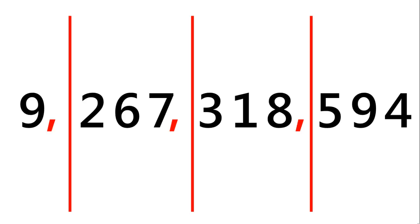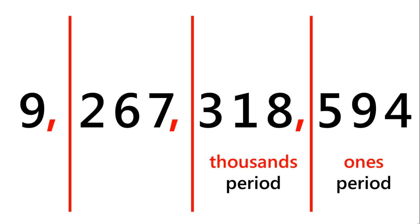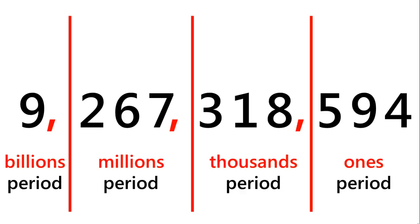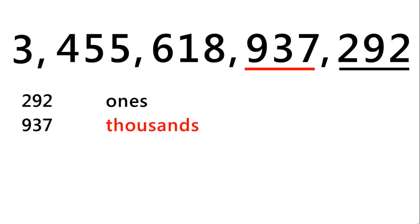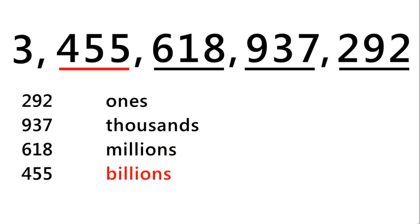Here are some common periods: the ones period, the thousands period, the millions period, and the billions period. Let's write the digits in each period for this number. We have 292 ones, 937 thousands, 618 millions, 455 billions, and 3 trillions.